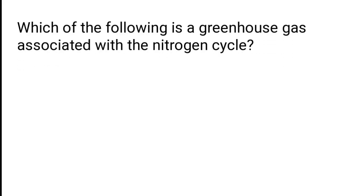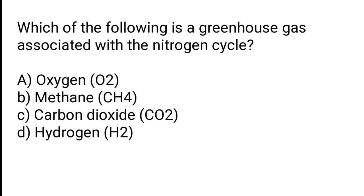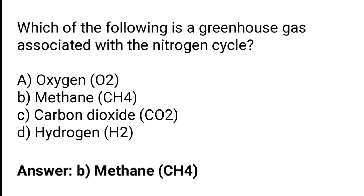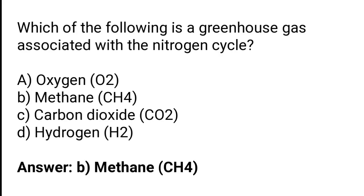Which of the following is a greenhouse gas associated with the nitrogen cycle? The options are oxygen (O2), methane (CH4), carbon dioxide (CO2), or hydrogen (H2). The correct answer is option B — methane (CH4) is a greenhouse gas associated with the nitrogen cycle.